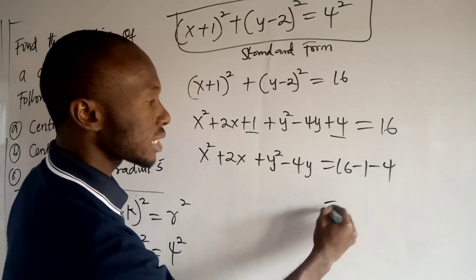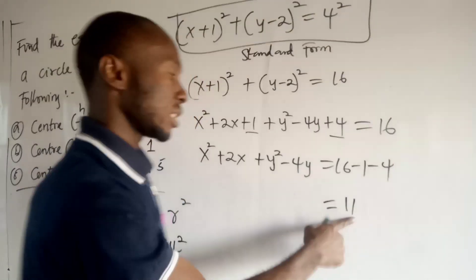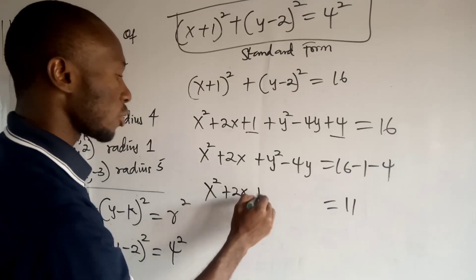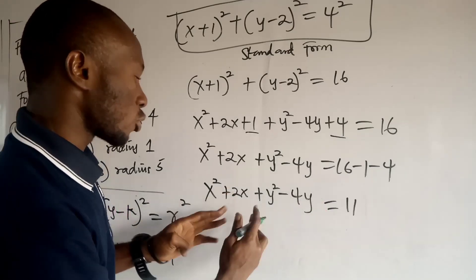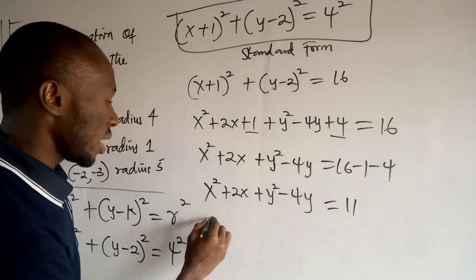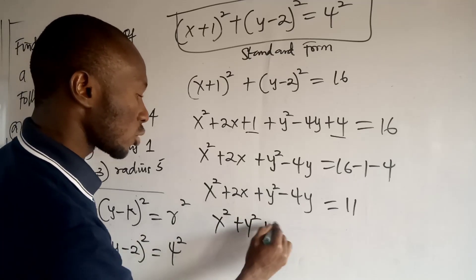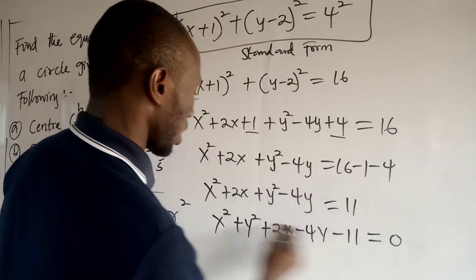equal to 16 minus 1 and minus 4. And all these guys will become 11 because 16 minus 1 is 15, then minus 4 is 11. So I have x squared plus 2x plus y squared minus 4y. And you might want to rearrange it very well. So you have x squared plus y squared, then plus 2x minus 4y minus 11 equal to 0.